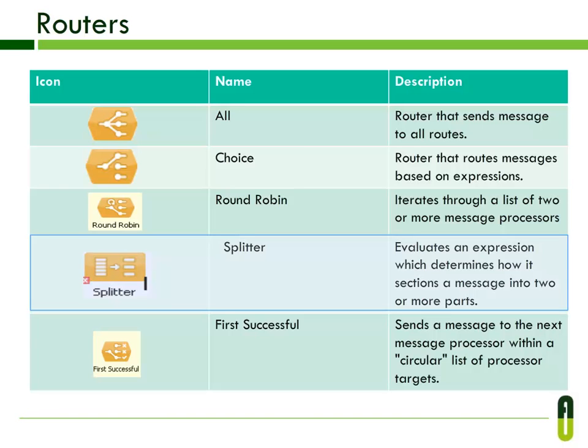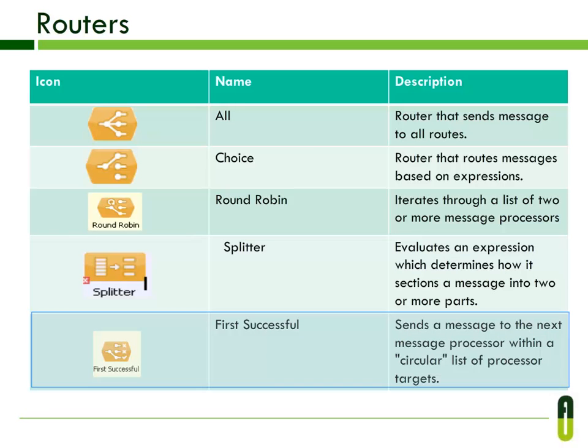The Splitter evaluates an expression which determines how it sections a message into two or more parts, then sends each message part in sequence to the next message processor in an application flow. First Successful sends a message to the next message processor within a circular list of processor targets.